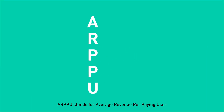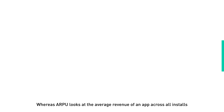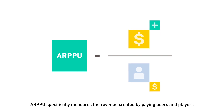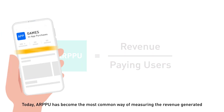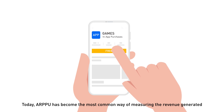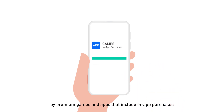ARPPU stands for Average Revenue Per Paying User. Whereas ARPU looks at the average revenue of an app across all installs, ARPPU specifically measures the revenue created by paying users and players. Today, ARPPU has become the most common way of measuring the revenue generated by premium games and apps that include in-app purchases.